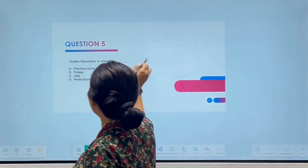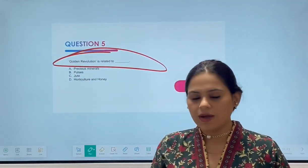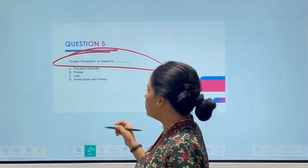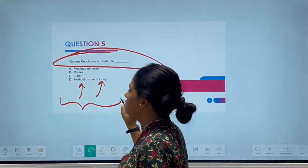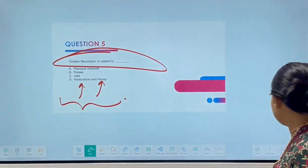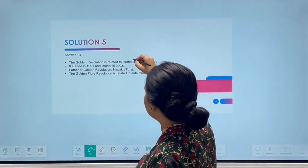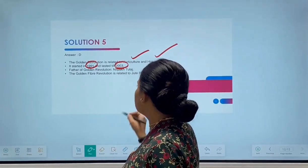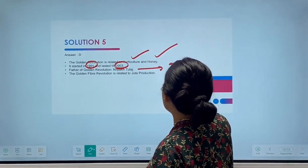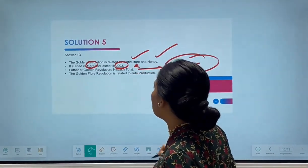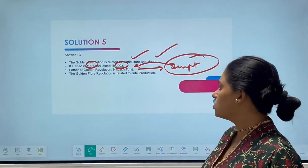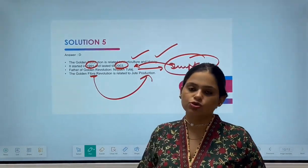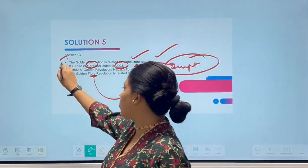Next question: Golden Revolution is related to what? Think about the color golden — it's the color of honey. So the Golden Revolution is related to horticulture and honey production. It started in 1991 and lasted till 2003. The father of the Golden Revolution is Nirpakh Tutej. You should also remember the Golden Fiber Revolution — whenever the word 'fiber' is used, it is related to jute production. All four points are very important and you must remember them.